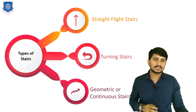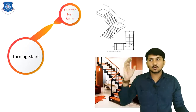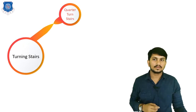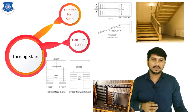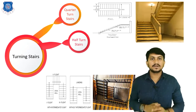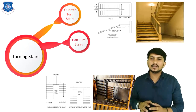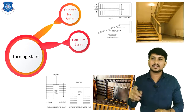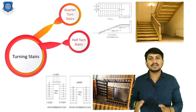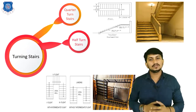The next type is turning stairs, which are further divided into several types. First is quarter-turn stairs, where we turn after 25% of the flight. Next is half-turn stairs, where we turn after 50% or half of the flight. Half-turn stairs are further divided into two types. The main difference between these two types is the space between two flights. In dog-leg stairs, the space between two flights is very less, while in open-well stairs, the space between two flights is much larger, used for providing lifts, pipes, or ventilation.